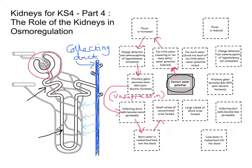Now let's think about the other side. If we start back in the middle at correct water potential, this time we're going to imagine that we have drunk too much, or maybe there's too little salt concentration in the blood, so our water potential is higher. If we have a lot of water in the blood, then all through the processes in the kidney we're not really going to be reabsorbing that much, because we want to lose all that excess water. So in this instance, our thirst is reduced.